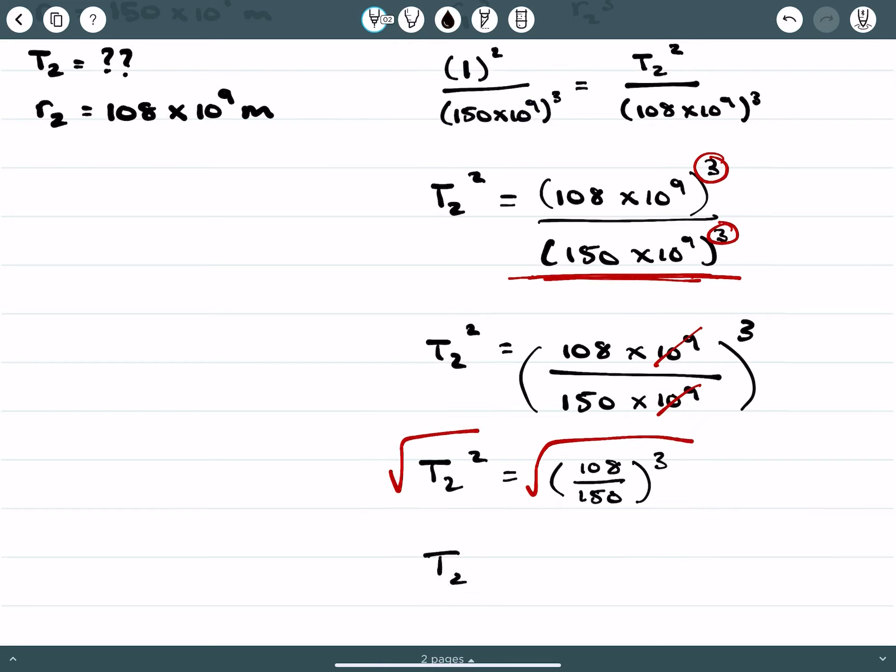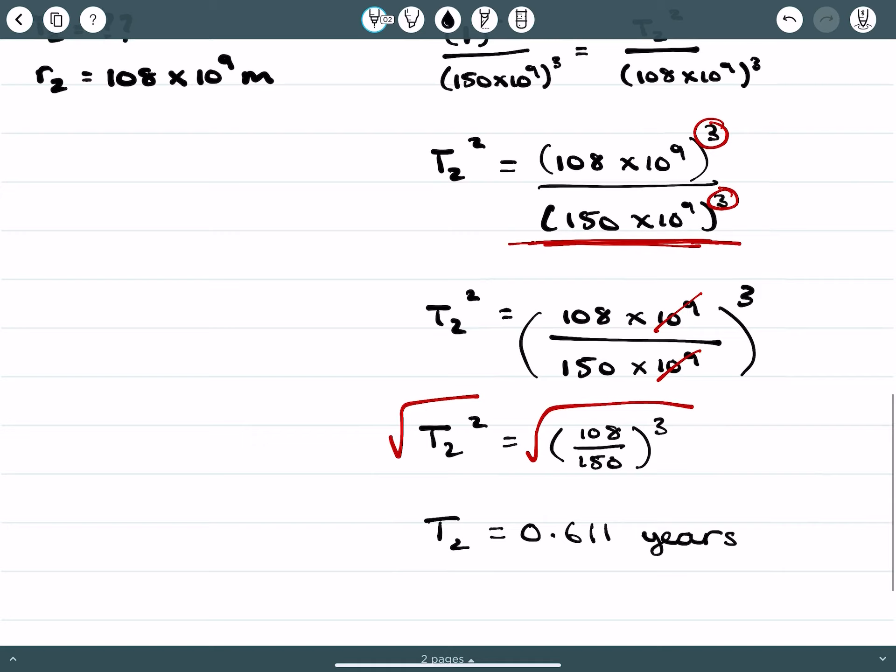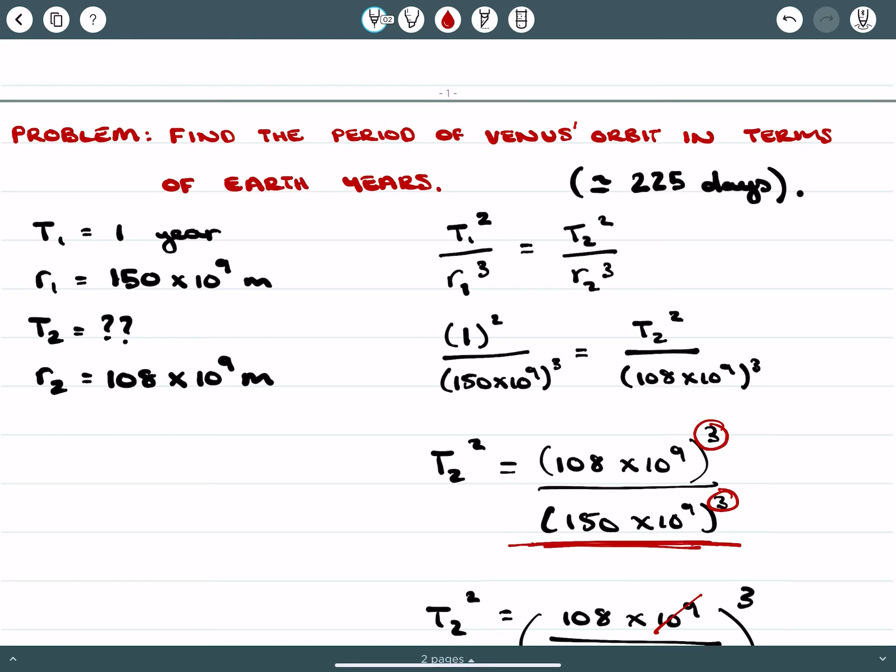This gives me T₂ equaling 0.611 Earth years. If I take that further to find what that is in terms of days, I get 223 days, which is a close approximation to what we expect. We expected about 225 days.